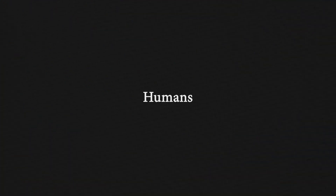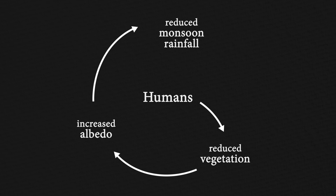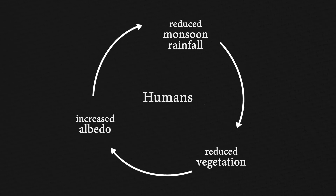In summary, according to this study, humans caused removal of vegetation from the Sahara by introducing livestock. The reduced vegetation increased the albedo of the desert, which in turn reduced monsoon rainfall. The reduced rainfall caused further desertification and vegetation loss.